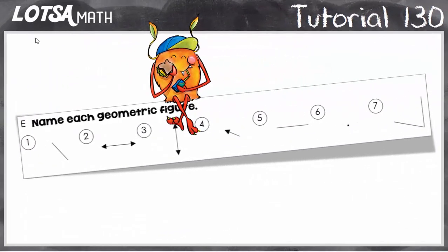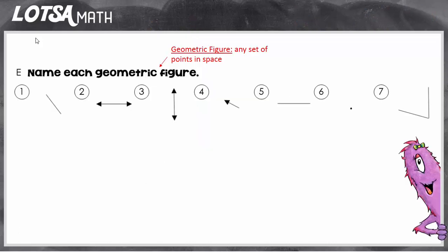For these questions we're going to name each geometric figure. A geometric figure is just any set of points in space. To understand that, we're going to start by learning what a point is.